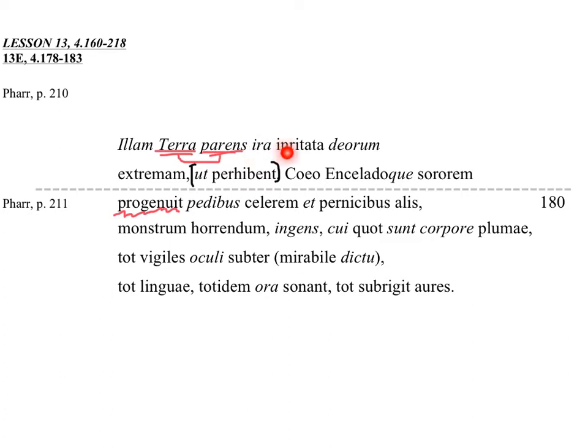Ira irritata. This describes Parent Earth enraged by the anger of the gods, meaning she was angry at the gods. This is an objective genitive here, by anger of the gods.